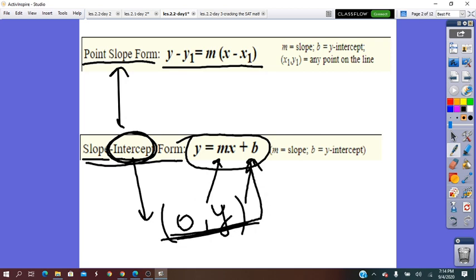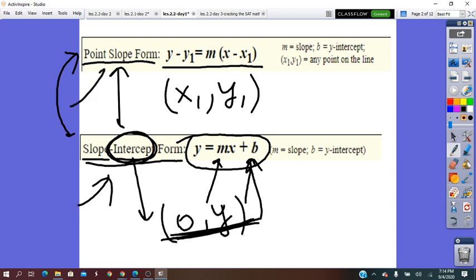But in point-slope-form, the point can be any other point from the line. So, the difference between the two forms stays in the point that is going to be used. If we know the y-intercept, then we use the slope-intercept form. If the y-intercept is not given, then we are going to use the point-slope-form.